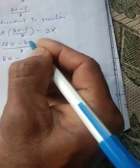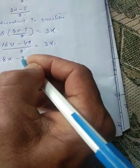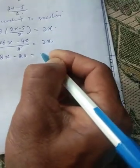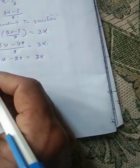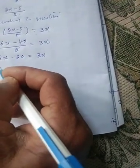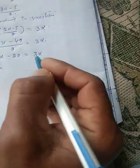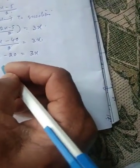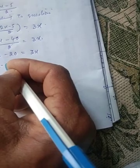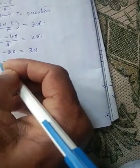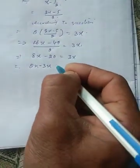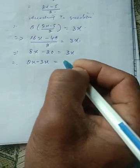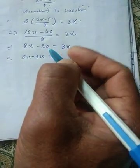16 divided by 2 is 8, so 8x minus 20 is equal to 3x. Now transposing 3x to the left-hand side: 8x minus 3x is equal to positive 20.